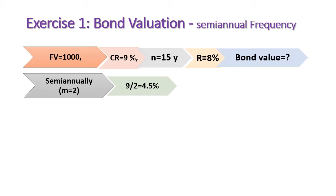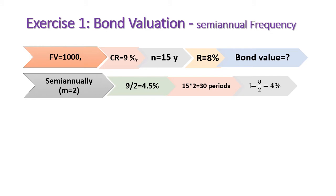The number of periods is also adjusted: the investor will receive payments every six months over the next 15 years, so 15 times 2 equals 30 semi-annual periods. The discount rate must also be adjusted to a semi-annual discount rate by dividing the annual rate of 8% by 2, giving 4%.